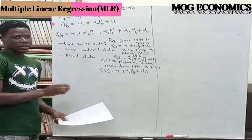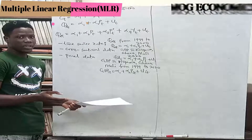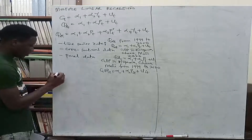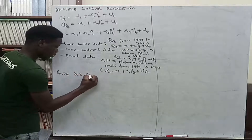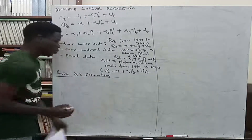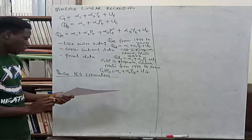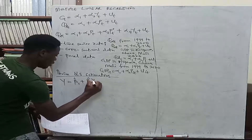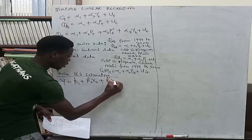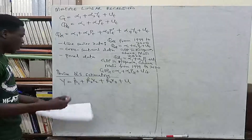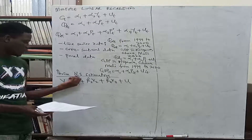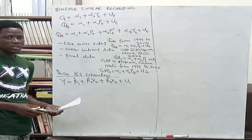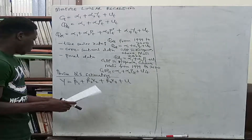The purpose of this class is to derive the OLS estimators under the multiple linear regression model. We will be working with the equation: Ŷ = β̂1 + β̂2·X2 + β̂3·X3 + u, where the hat notation indicates these are estimated values. β̂1, β̂2, and β̂3 are the OLS estimators we are about to derive formulas for.